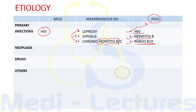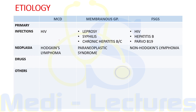The most common pattern in HIV is focal segmental glomerulosclerosis. Regarding neoplasia: the neoplasia leading to minimal change disease is Hodgkin's lymphoma. Membranous glomerulopathy is mainly due to paraneoplastic syndromes from carcinoma of the lung, breast, and ovary — in these cancers there is increased synthesis of IgG antibody which gets deposited on the glomerular basement membrane.